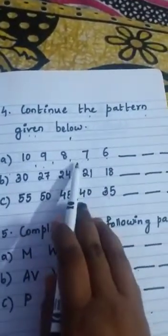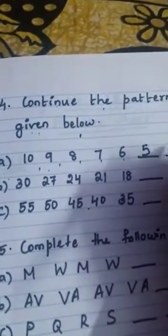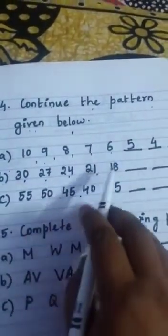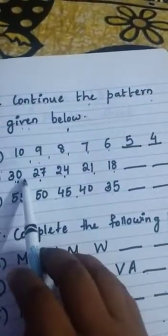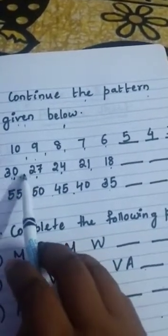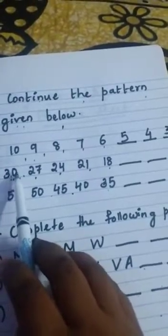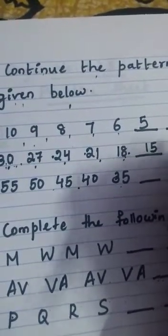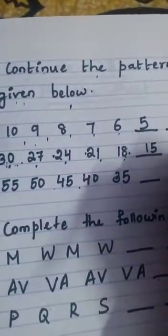Question 4: continue the pattern given below. For 8, 10, 9, 8, 7, 6 — it's counting backward, so you write 5, 4, 3. Next: 30, 27, 24, 21, 18 — three numbers are subtracted each time. 30 minus 3 is 27, 27 minus 3 is 24, 24 minus 3 is 21, 21 minus 3 is 18. So 18 minus 3 is 15, then 15 minus 3 is 12, then 9.